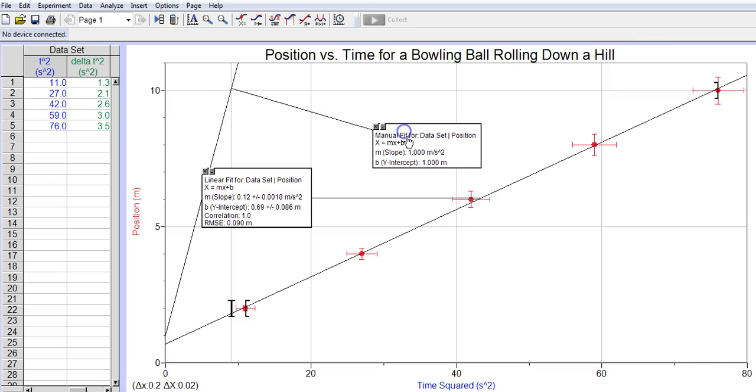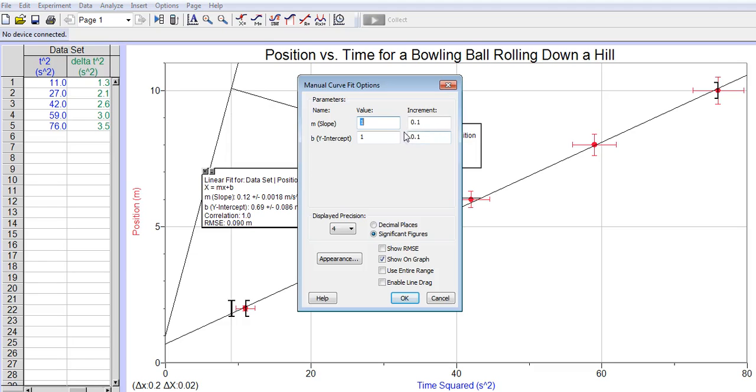Now notice that gives me a new manual fit line. Now at this point I still can't move that around, so I'm going to double-click here on the name of it. And down here, it gives me the choice to enable the line drag. I'm going to put that on. I'm also going to change my position to 2 to match the other.